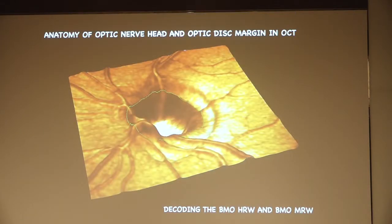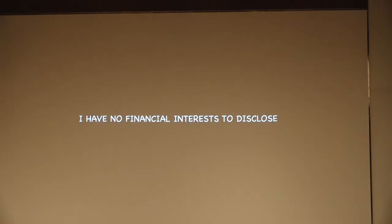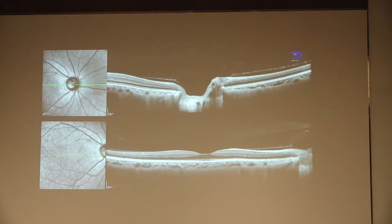I'll straight away go into my topic: the anatomy of the optic nerve head and optic disc margin in OCT, decoding the BMO HRW and BMO MRW. Understanding the anatomy of the OCT is important because to understand the GMP program in Spectralis, we need to decode what exactly it is.